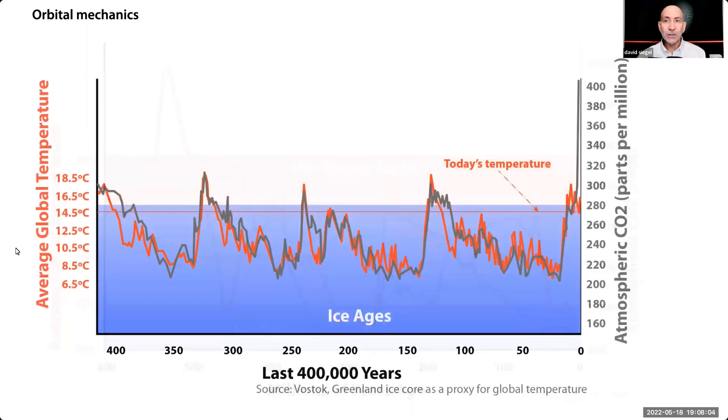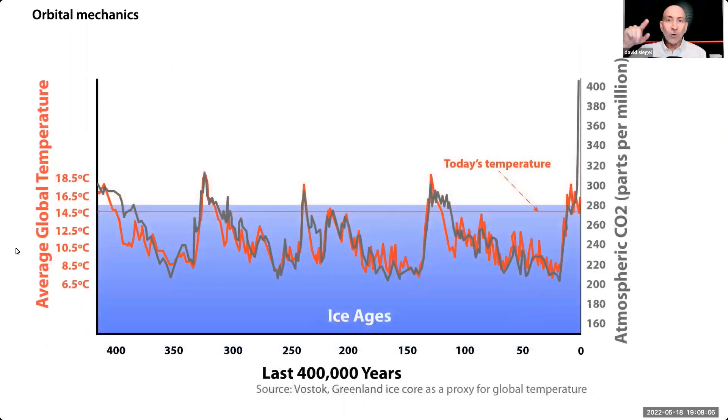At the scale of 400,000 years, we see the cyclical effect of orbital mechanics. The Sun's influence changes as the Earth's axis tilts and wobbles. Note that temperature in red almost always moves first while CO2 moves later. CO2 comes out or goes into the oceans over decades as a result of Henry's Law, which says that the warmer ocean will outgas CO2, and as oceans cool, they absorb CO2.